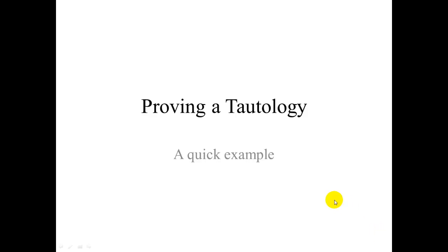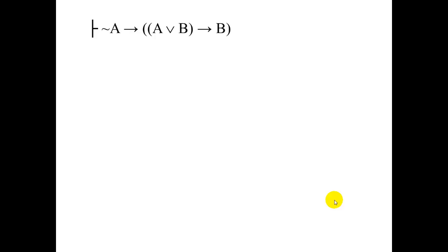Mary from the Tuesday Thursday section asked for an example of proving a tautology. So here's a quick example. Suppose you were asked to prove this tautology: not A implies A or B implies B. And so we write this with just the single turnstile in front of it to indicate that it's a tautology.